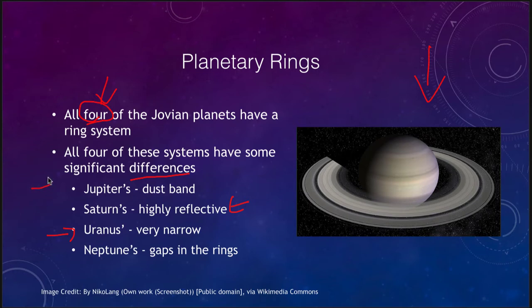Jupiter's were the next detected, which are a very faint dust band — some very minor rings, but there is at least some portion of a ring there. And Neptune's are unusual in that there are gaps in the rings. They are not nice smooth rings, but there are actually areas where the material is denser and areas where material is less dense.